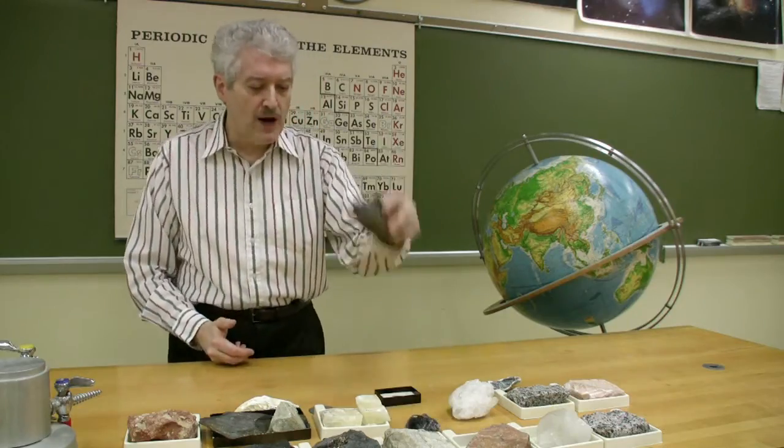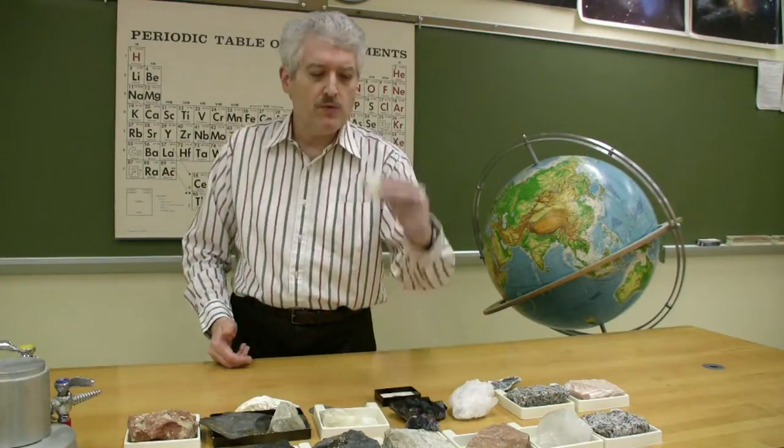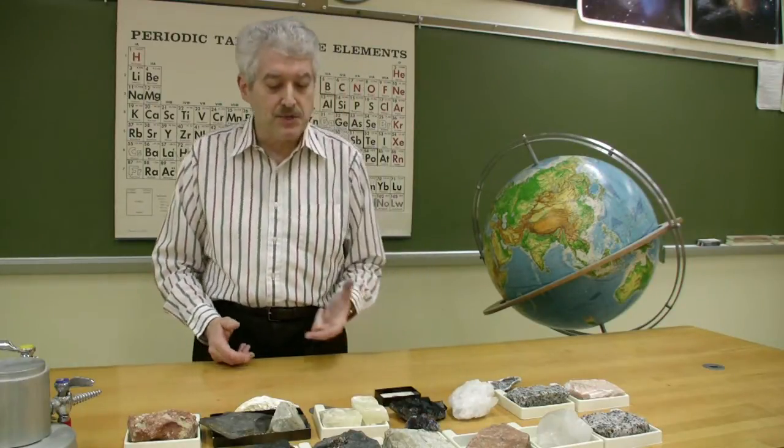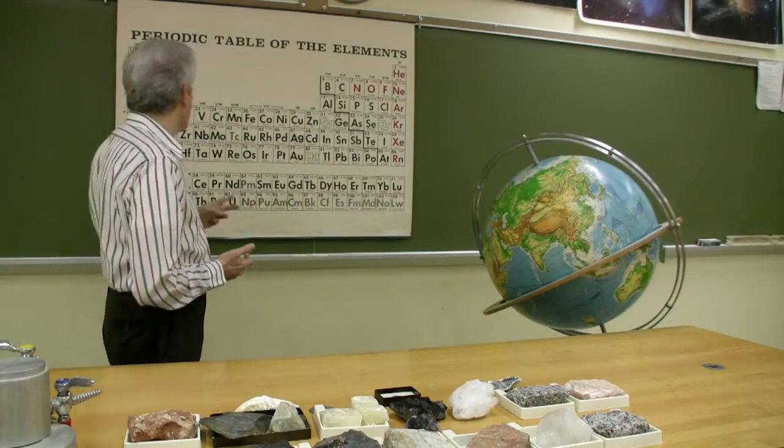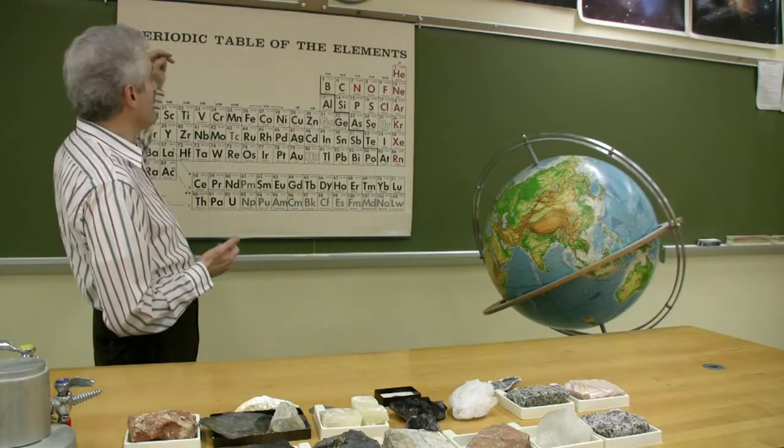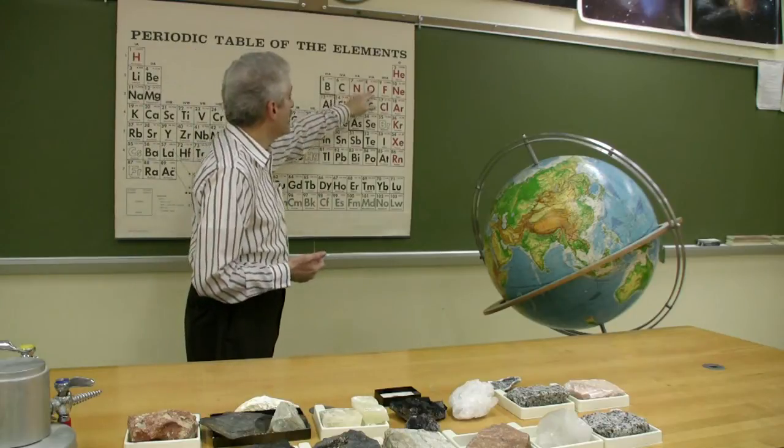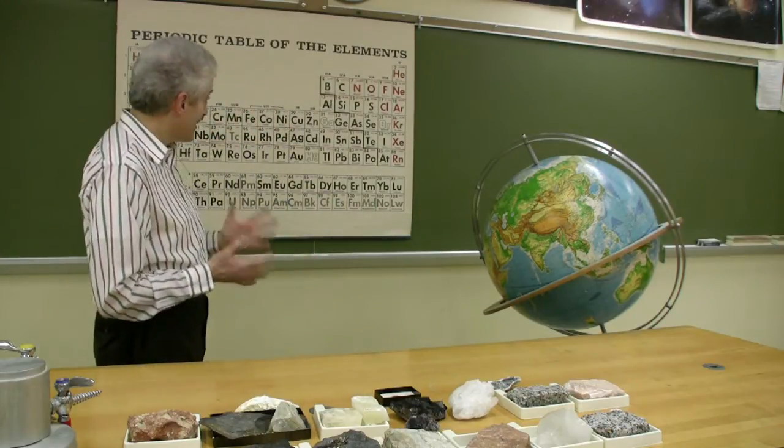Now in materials like fluorite and calcite, what we have are metal atoms and atoms of nonmetals. For example, calcium over here on the periodic table, carbon and oxygen, those are the components of calcite.